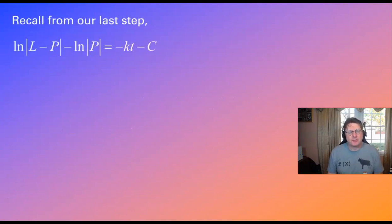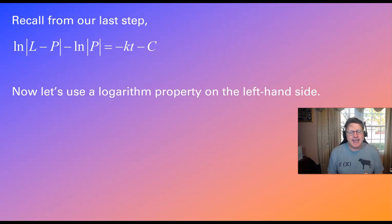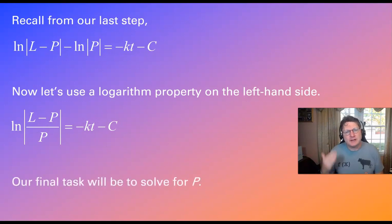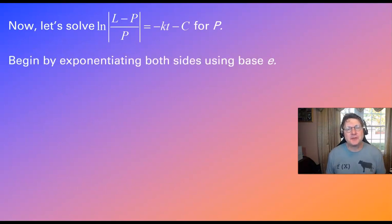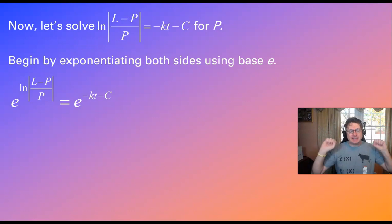And so now from our last step, we're dealing with this. And now we can use a logarithm property to kind of clean up the left-hand side. And that allows that left-hand side to be written as a quotient. You remember the difference of two natural logs would be the natural log of a quotient. And now we're starting to make big progress. Because you got to remember our final task, our whole focus right now, is solving for P. So how do we make that happen? Well, to get rid of that natural log, we're going to exponentiate both sides using a base E. So you just let E be the base, let both sides be the exponents, and let's see what happens.